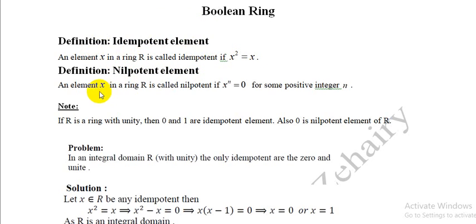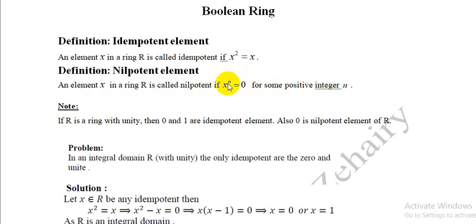Nilpotent element: An element x in a ring R is called nilpotent if x to the power n equals 0 for some positive integer n. So the nilpotent element satisfies the condition xⁿ = 0, where n is a positive integer.